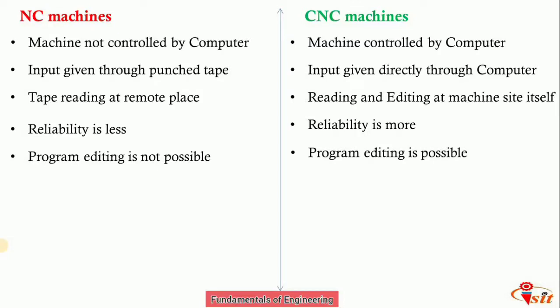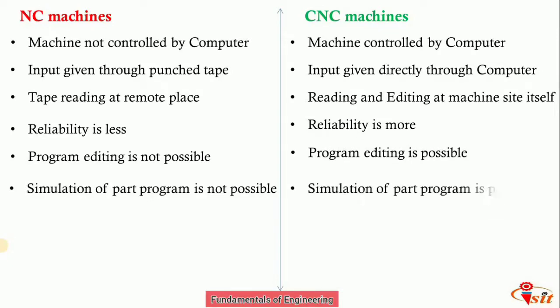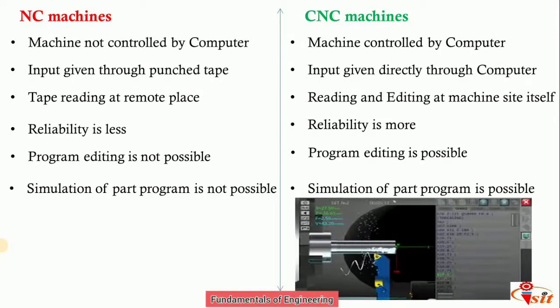In CNC machines, you can easily edit the program based on the part design, change the programmable data, and provide that data to the MCU based on the part program to perform operations. In NC machines, simulating the part program is not possible, but in CNC machines, program simulation is possible — you can see the simulation of a turning process to see how the process is going to happen.